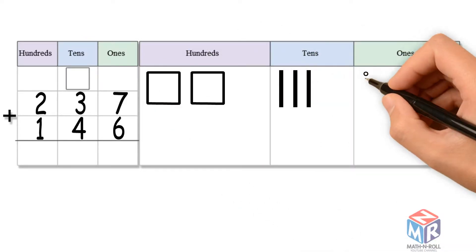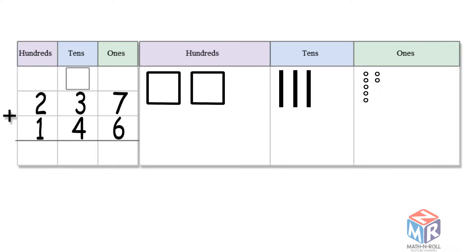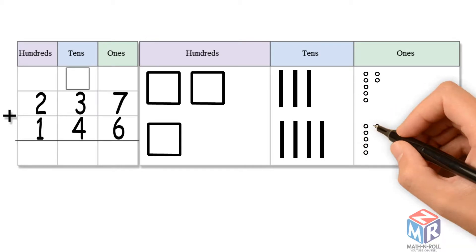237 has two hundreds, three tens, and seven ones. 146 has one hundred, four tens, and six ones.